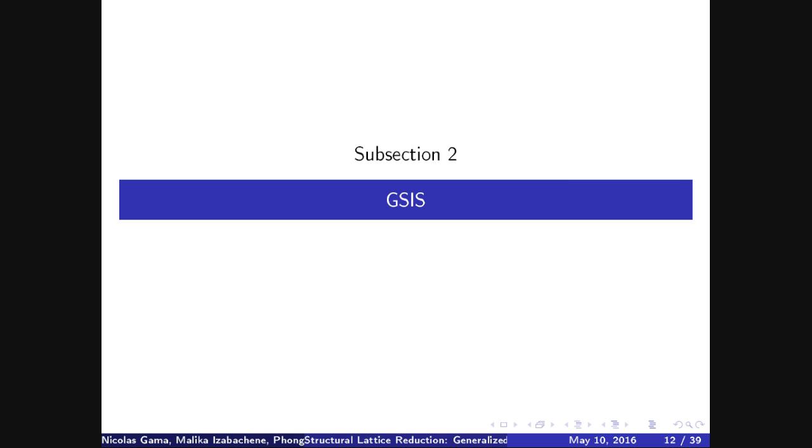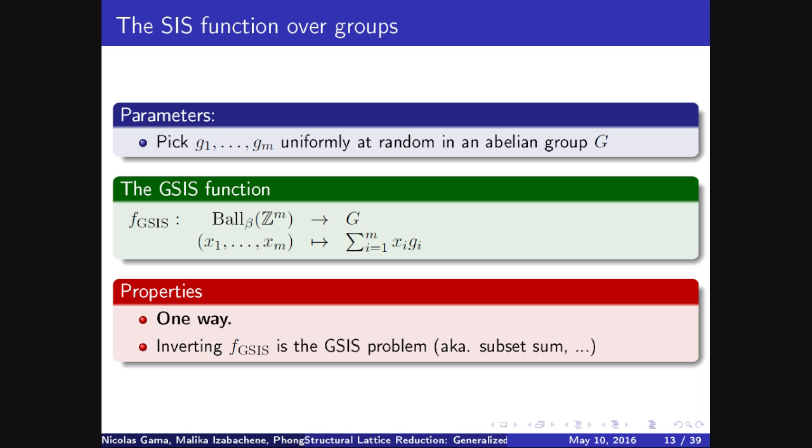Now let's define the SIS function. I will present it with groups. So let's start with an Abelian group G, and let's pick m elements at random in this group. What is the SIS function? Well, it's simply you take m integers and output the linear combinations of the g_i with these coefficients. So this function is totally linear. But if you restrict the input domain to only short elements, for example in the ball of radius beta, then magically your function becomes one way. It means that although for each image there are an exponential number of pre-images, you cannot find any of them in any reasonable time. So inverting the SIS function is the GSIS problem, which is sometimes called subset-sum problem, depending on the shape of the group.